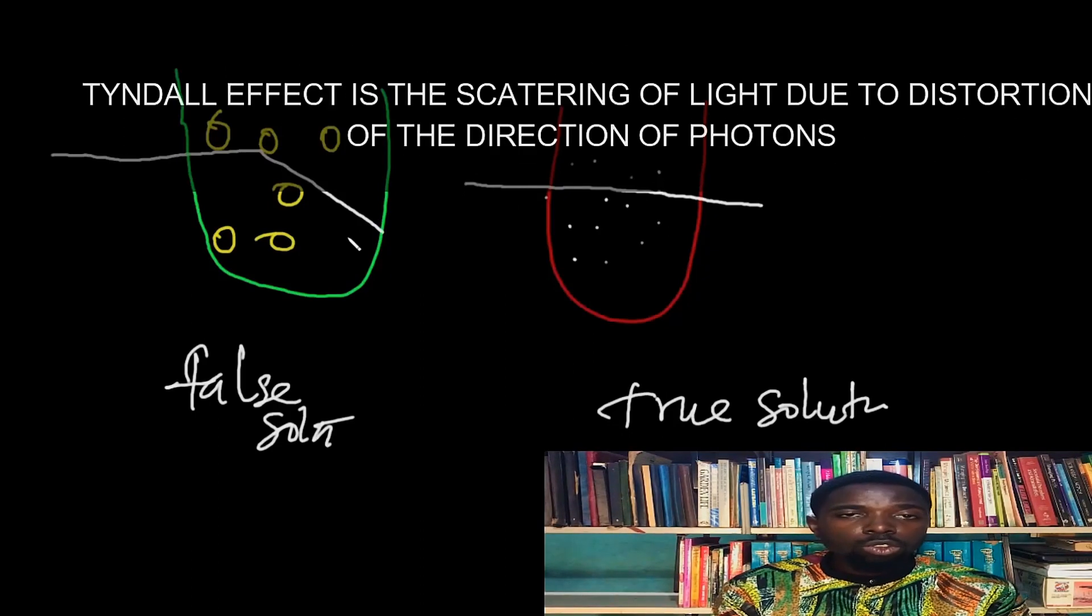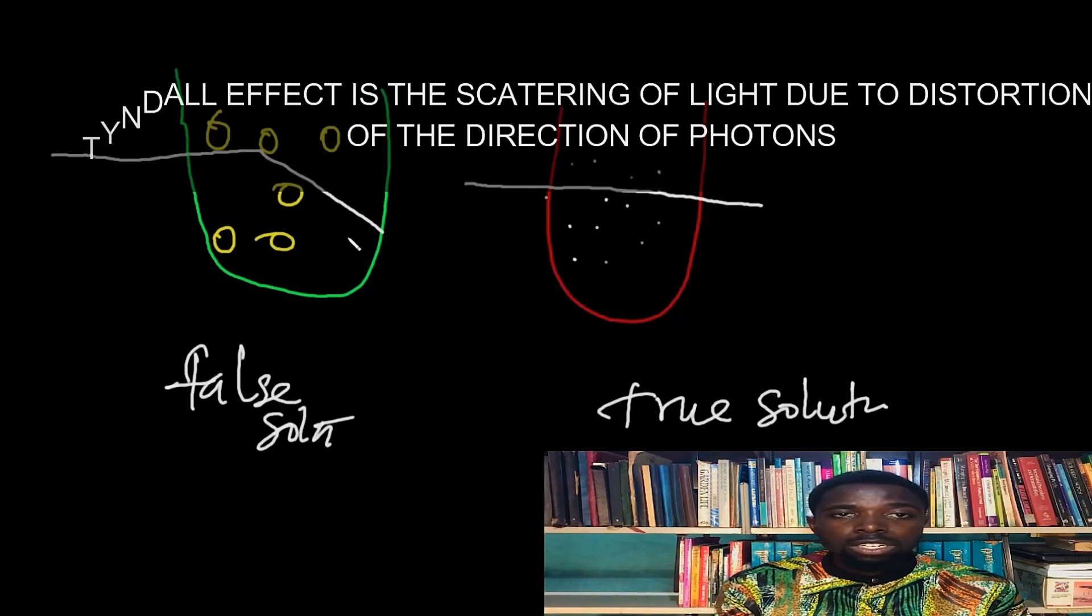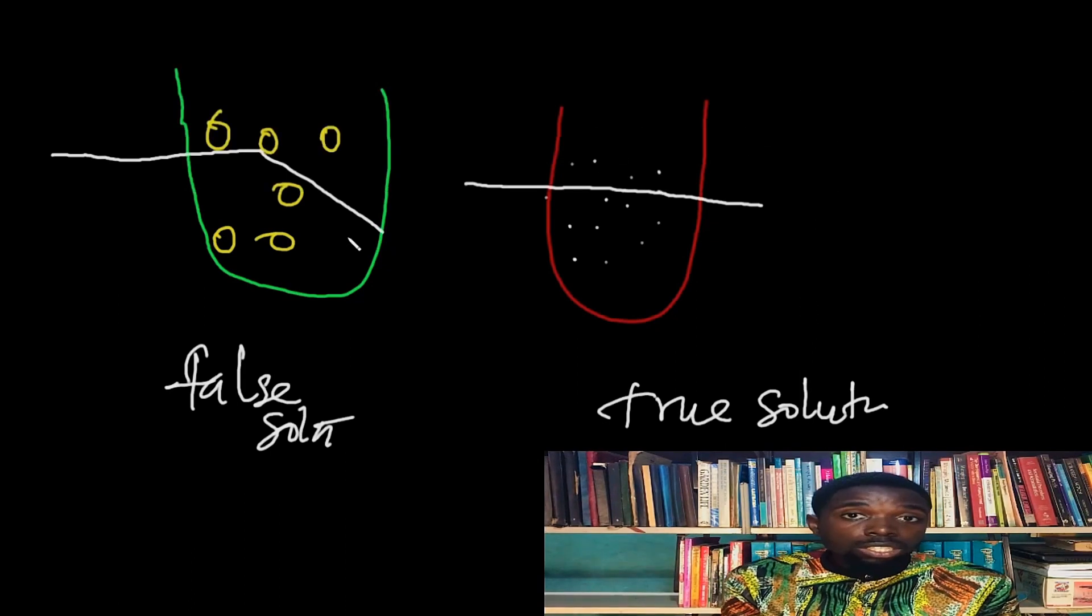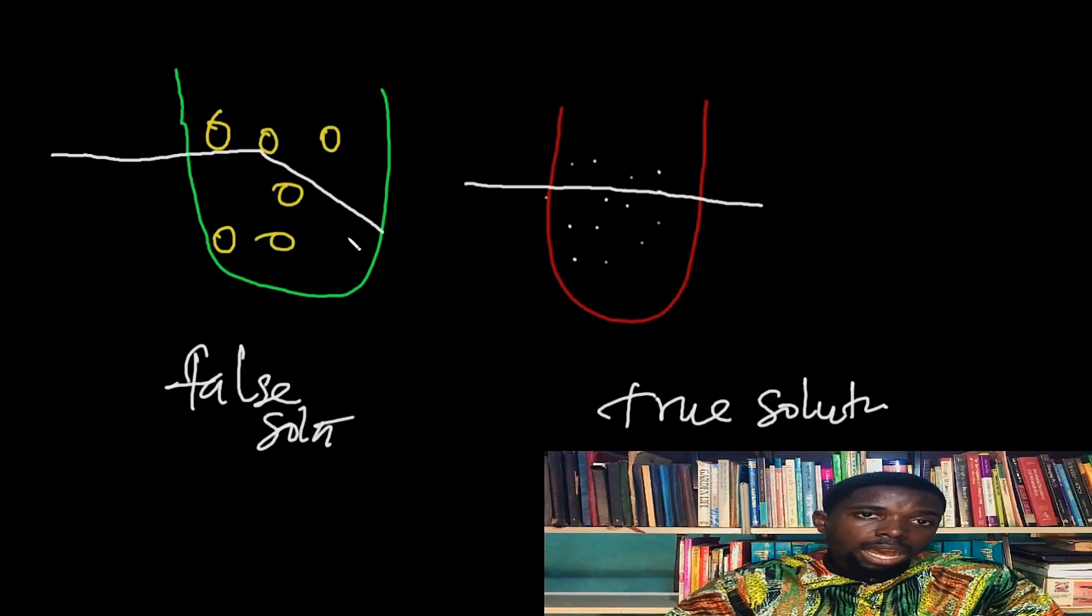Tyndall effect is the scattering of light as a result of distortion of the direction of the photons. So once the direction of the photons or light rays is changed, that's what we refer to as Tyndall effect.